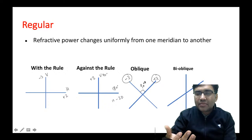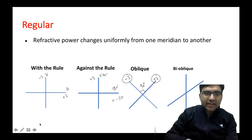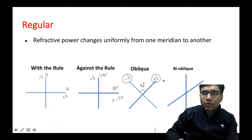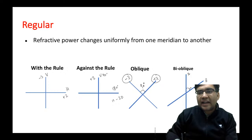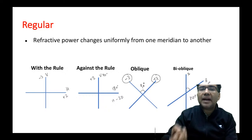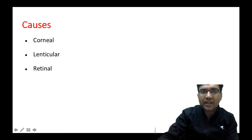Then we have the next type called bioblique astigmatism. In bioblique astigmatism, you have two meridians — let's say meridian A and meridian B — and these two meridians are not at 90 degrees to each other. This is called bioblique astigmatism. These are the types of regular astigmatism.